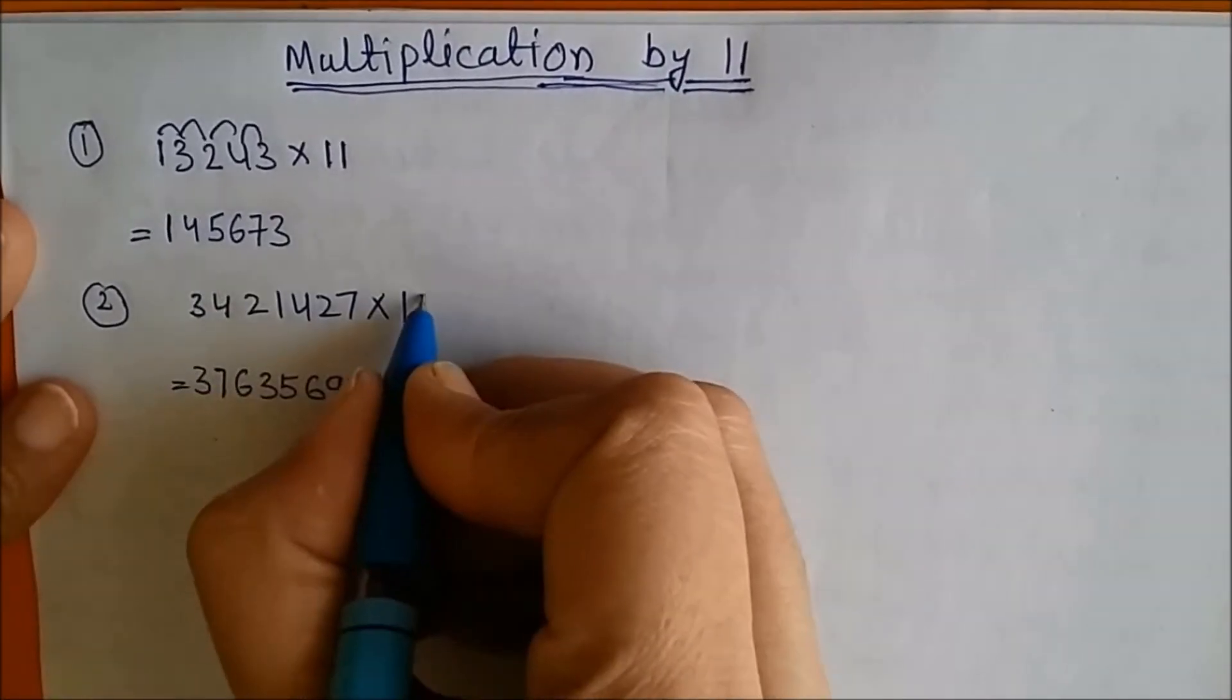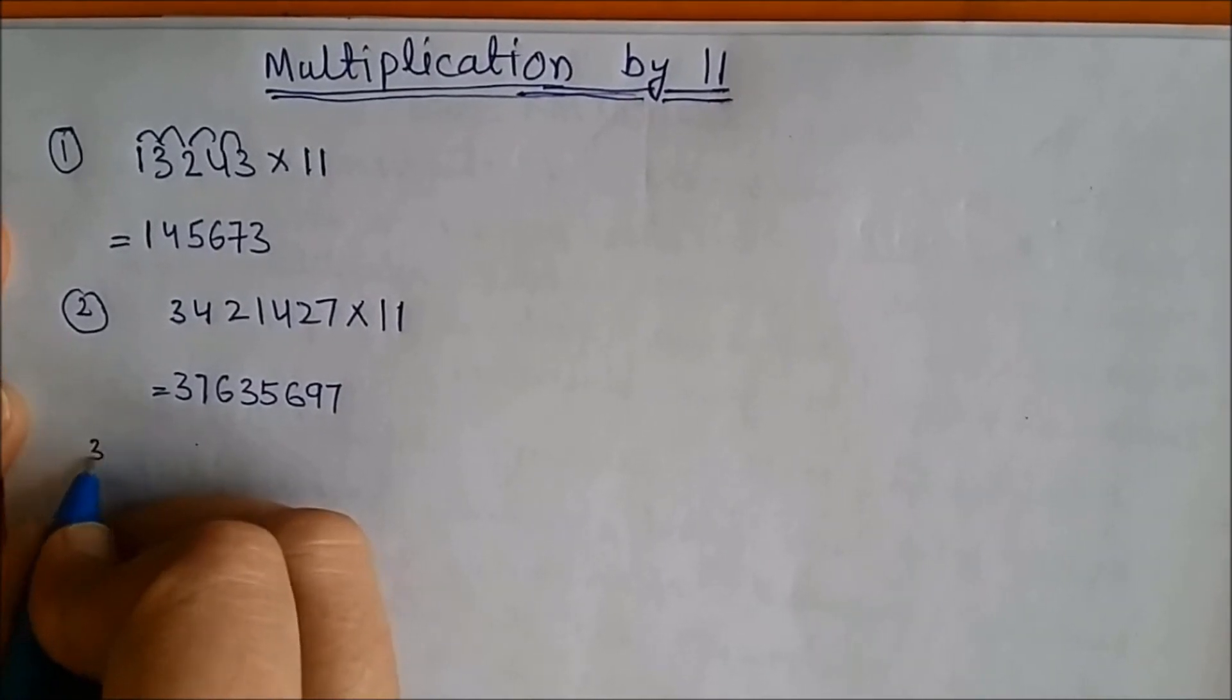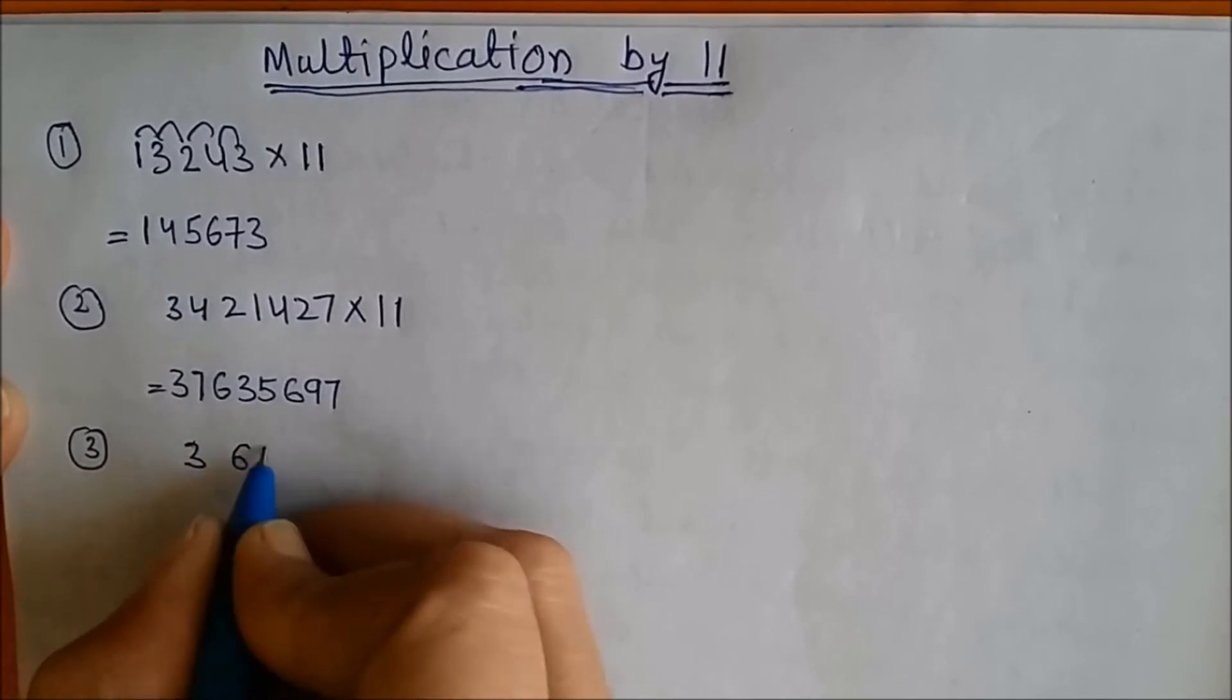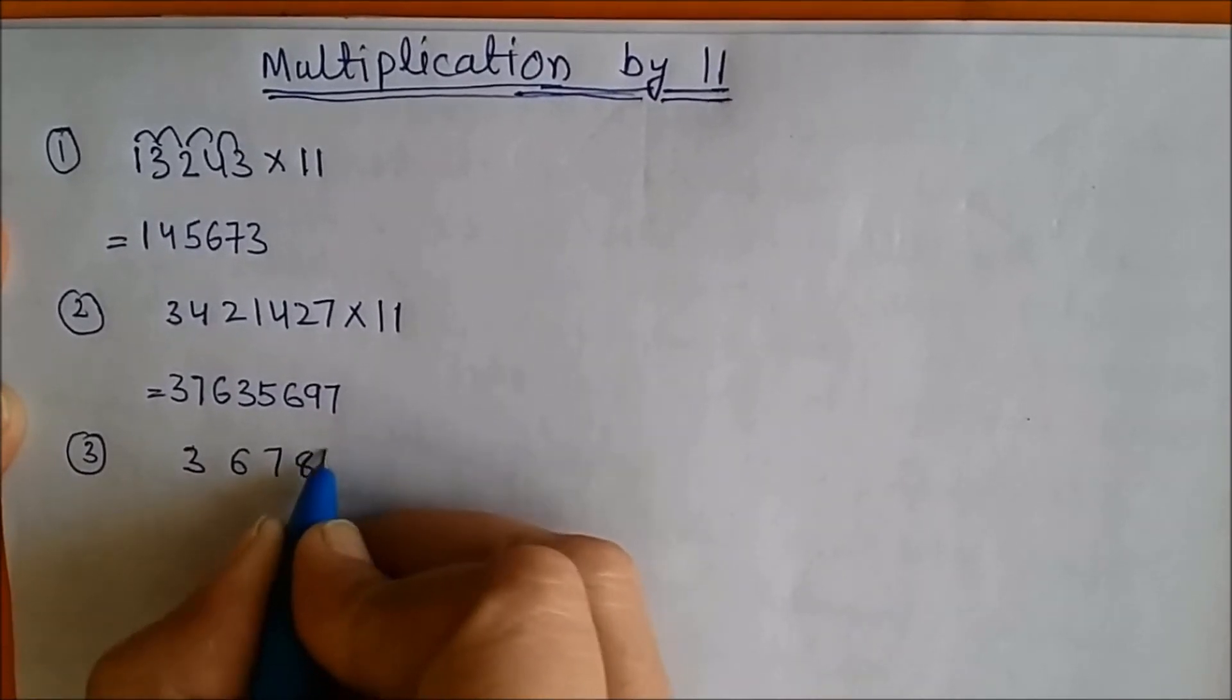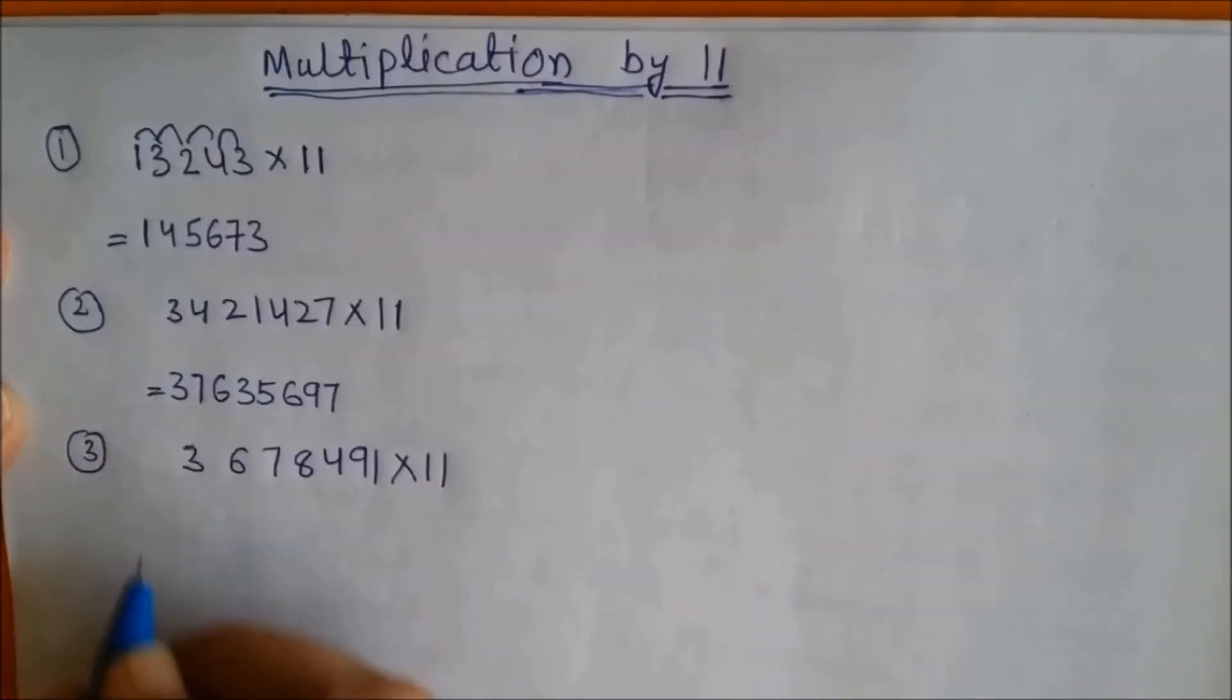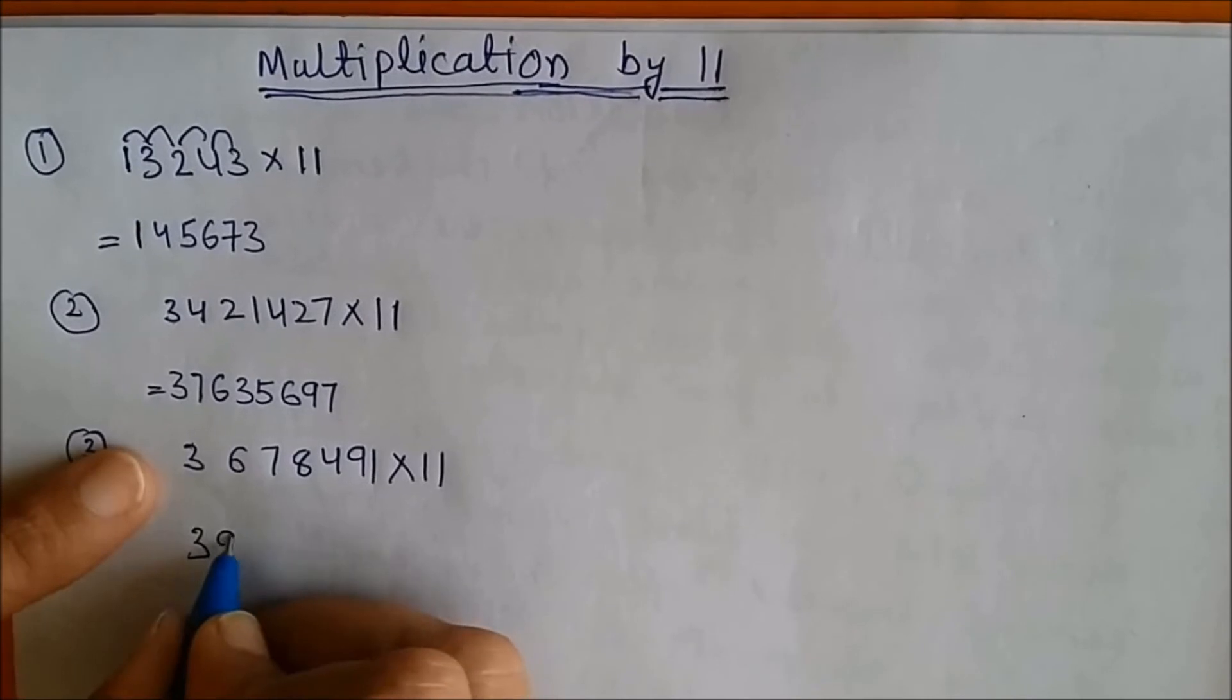Let us take one more example. Suppose I have a number like 3678491 and multiply it by 11. So first number as it is, sum of these two: 9.